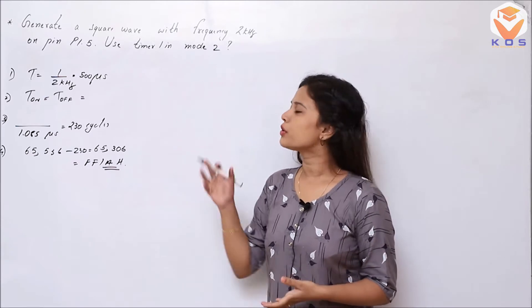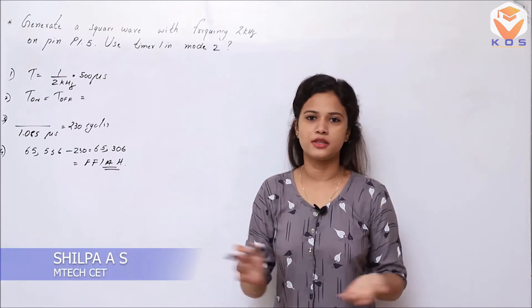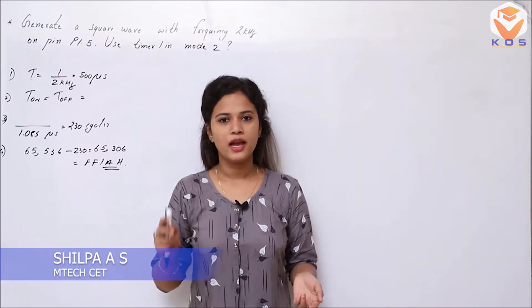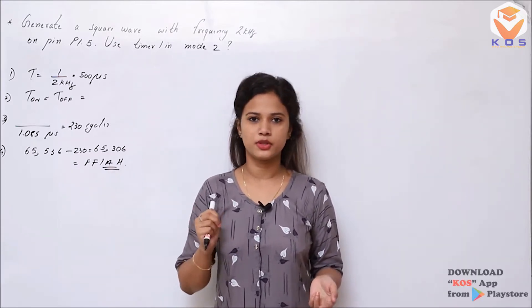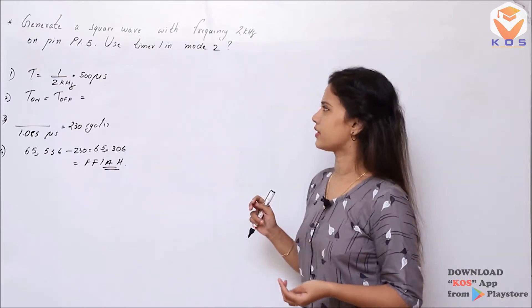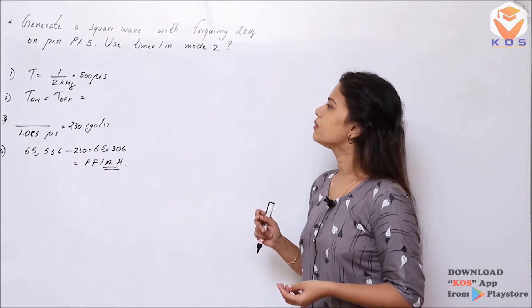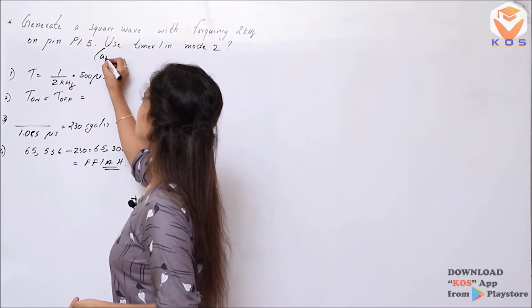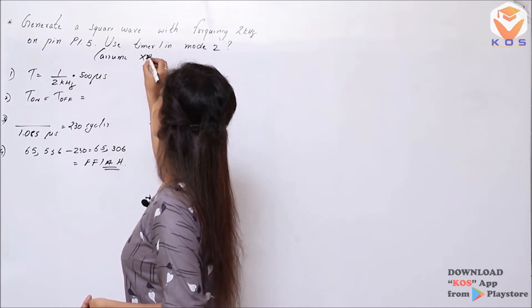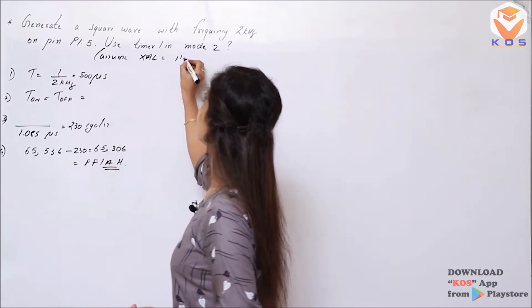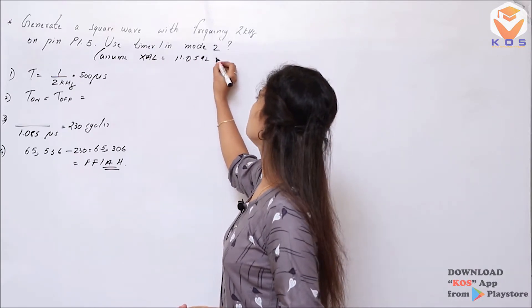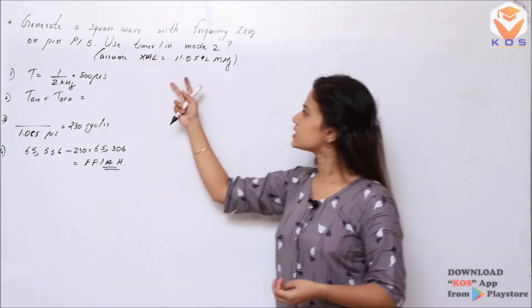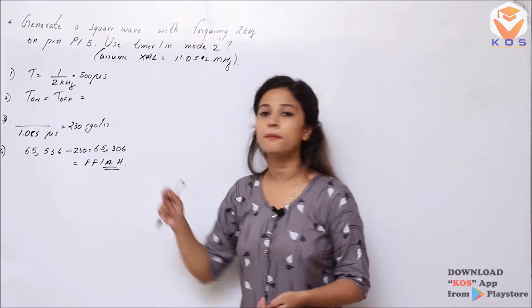The next section is wave generation — specifically, square wave generation. We can create a delay here. Similarly, we can generate a square wave in this program. The question is: generate a square wave with a frequency of 2kHz on pin P1.5. In this case, let's assume that the crystal value is equal to 11.0592 MHz. Assume this value and generate a square wave with a frequency of 2kHz on pin P1.5.